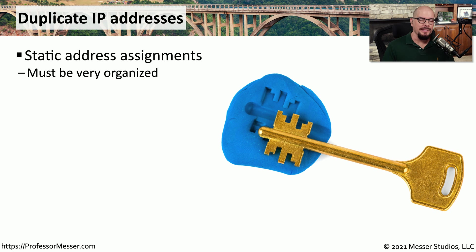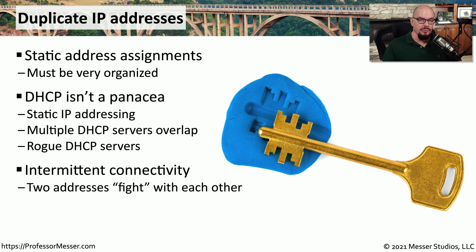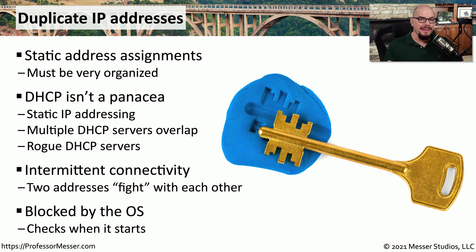It would probably be more common to have a duplicate IP address than a duplicate MAC address. This is certainly common if you are statically assigning devices, because it's very easy to accidentally assign the same IP address to two devices. This might also be associated with DHCP — if someone configures static IP addresses inside the DHCP server, or sets up multiple DHCP servers inadvertently, you could be assigning duplicate IP addresses from two separate DHCP servers. These days it's more common for an operating system to detect that an IP address already exists and disable itself to avoid creating a duplicate.